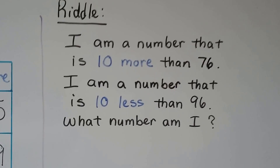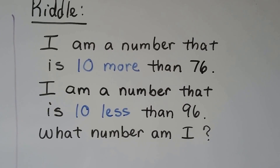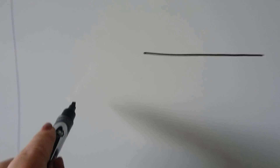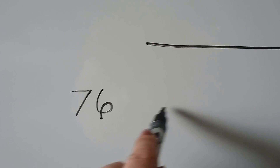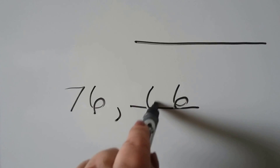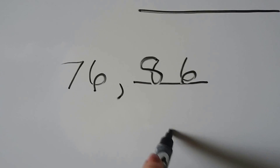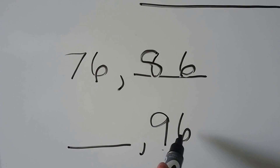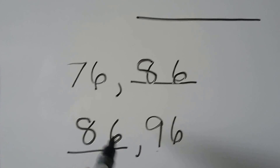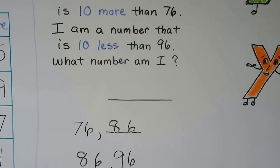Here we have a riddle: I am a number that is 10 more than 76, and I am a number that is 10 less than 96. What number am I? We know it's 10 more than 76 — the ones would stay the same and we'd have one more 10, so instead of 7 it would be 8. It also says it's 10 less than 96 — the ones stay the same and 1 less than 9 is 8. So 86 — it fit both of them and made it true. The number is 86, and the only thing that changed was the number in the tens place while the ones stayed the same.